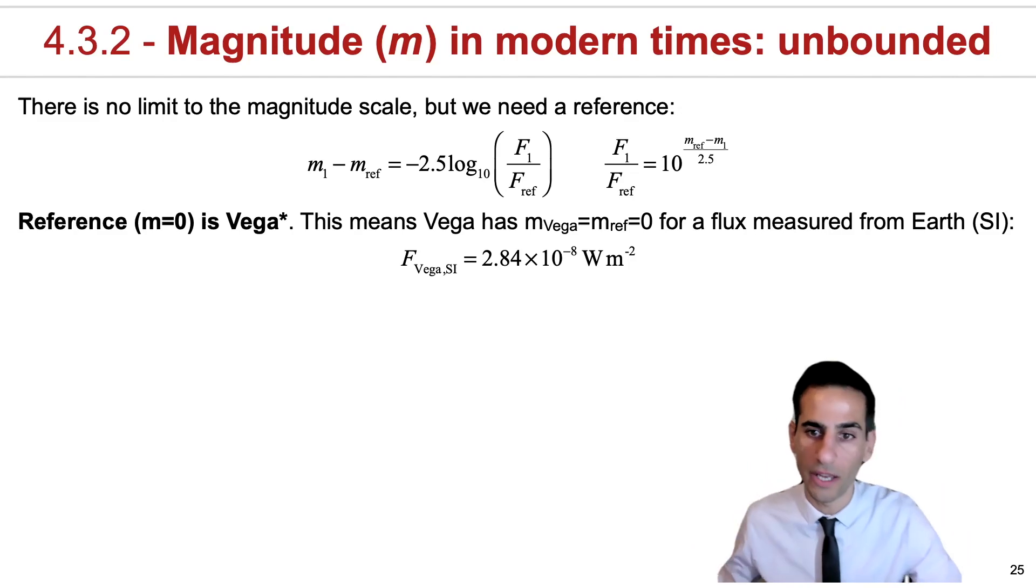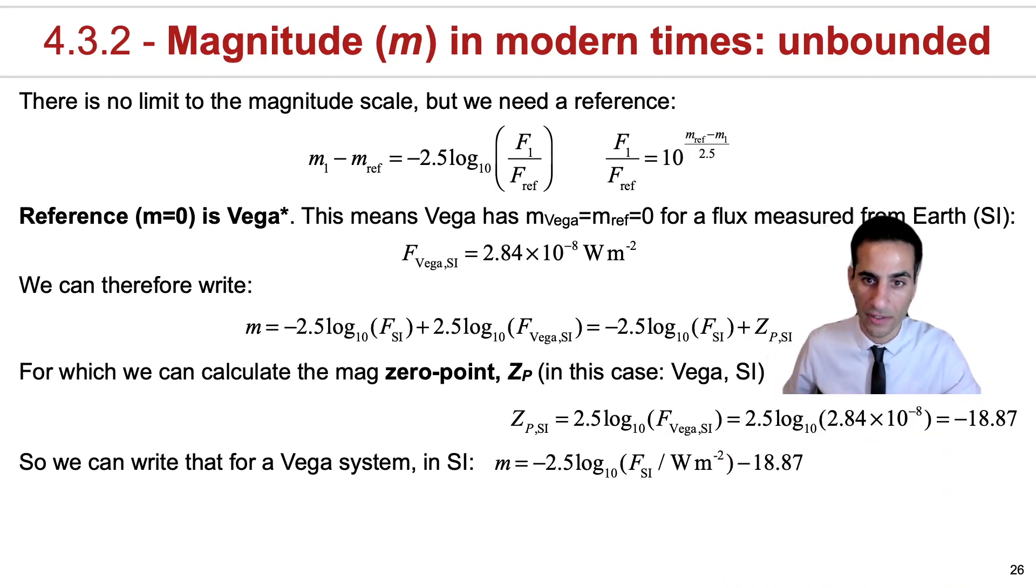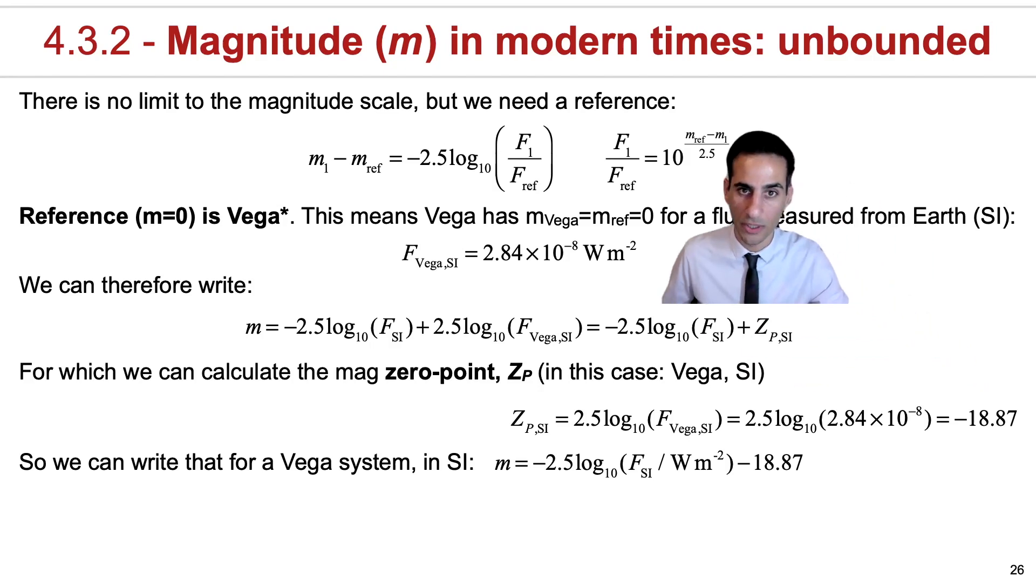But there's also an easier and empirical way that you can rewrite the equations that is used a lot in astronomy. And that's why I'm introducing it here. And hopefully you can follow where this comes from. This will rely on the introduction of this ZP. This is a zero point.